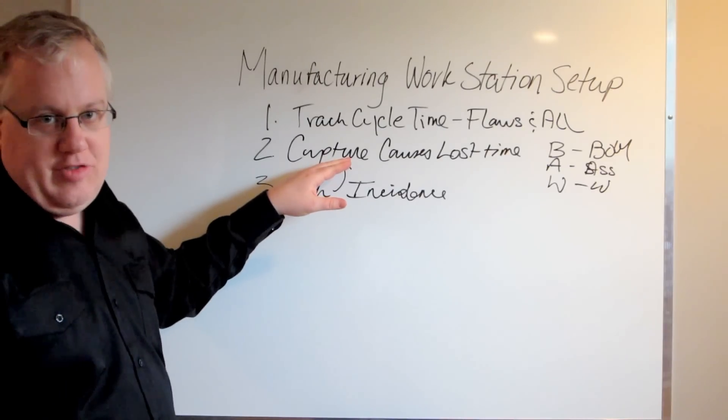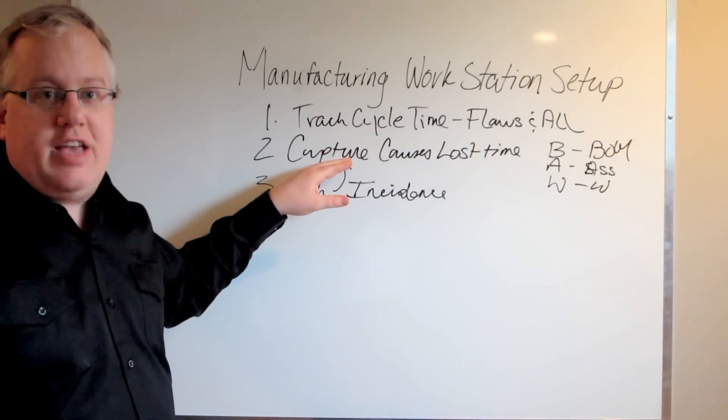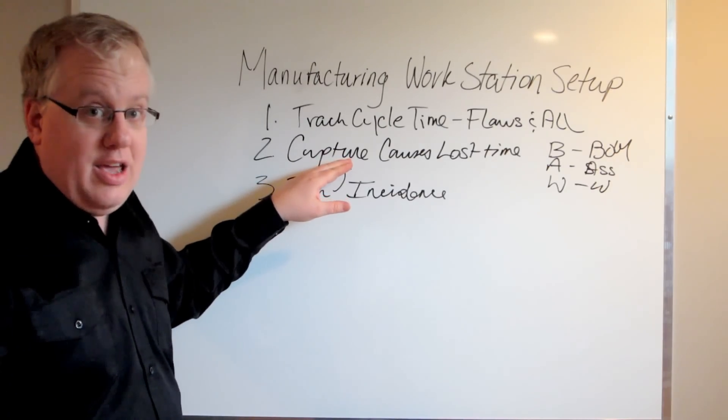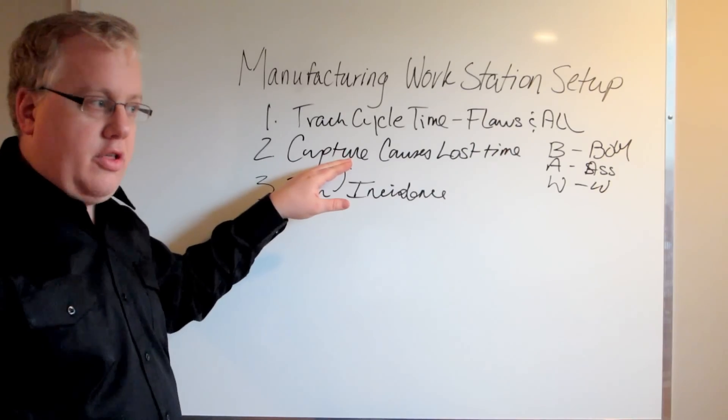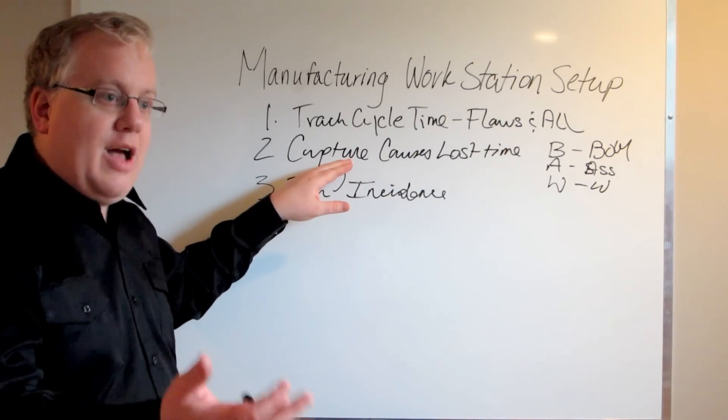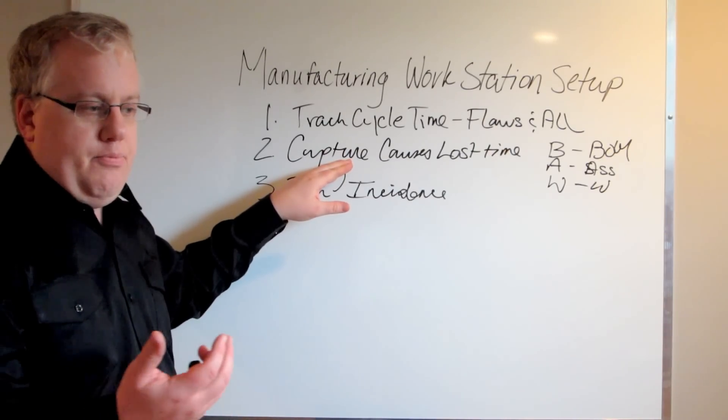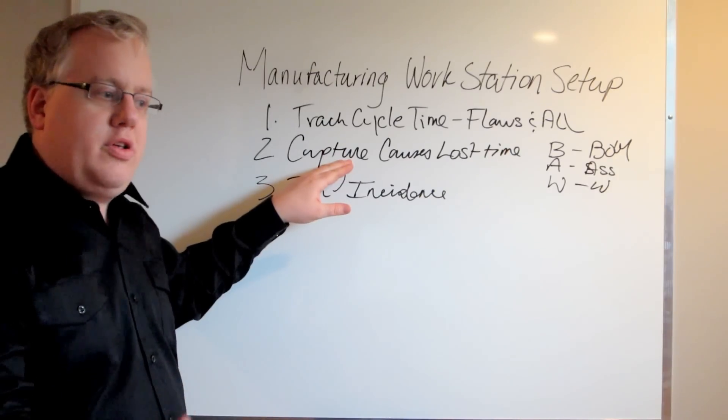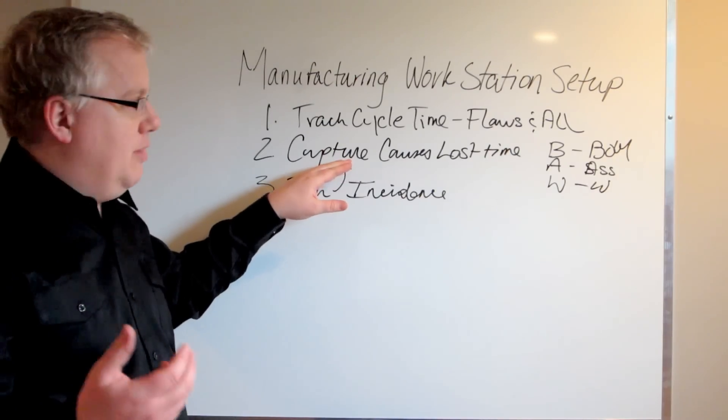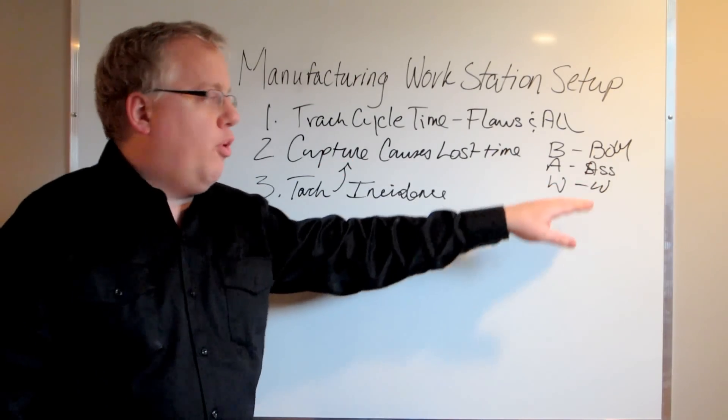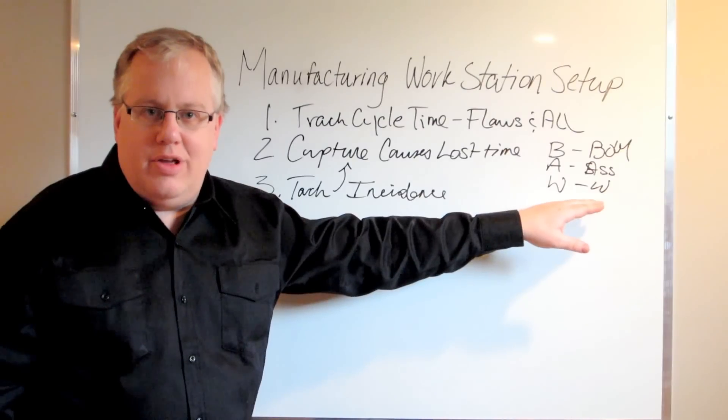Second step is capture the causes of lost time as it happens. It's going to be obvious as you're taking those cycle times. You're going to see what's causing that worker stress. It's going to be an unclear bill of materials, a poor assembly drawing, work orders that aren't making any sense.